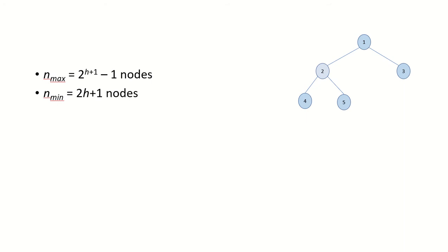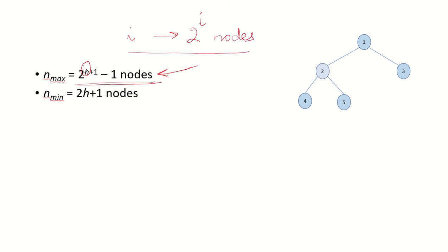What will be the maximum number of nodes in a full binary tree, and what will be the minimum number of nodes? As discussed in an earlier video, for any binary tree the maximum number of nodes is 2 to the power of h+1 minus 1, where h is the height of the tree. This is true for all types of binary trees, including the full binary tree, because any level i can have a maximum of 2 to the power of i nodes.